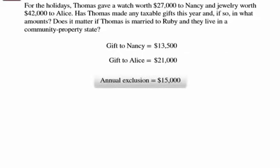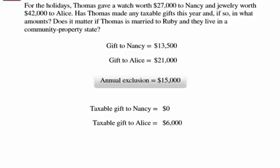After applying the annual exclusion, the amount of taxable gift made to Nancy will be zero, because the total gift of $13,500 is within the annual exclusion amount of $15,000. The amount of taxable gift made to Alice will be $6,000, calculated as the difference between $21,000 and $15,000.